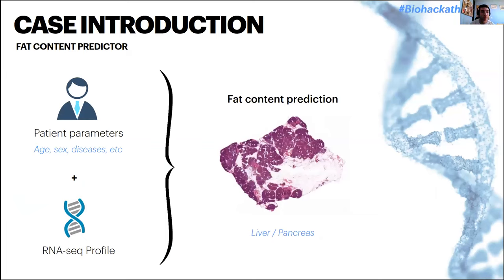Basically what we wanted to do for our challenge was make some sort of fat content predictor. The kind of data we had available included parameters like age and sex of the patients, as well as some of the related diseases they may have had. And then for a subset we had the RNA sequence profiles. We tried in several different ways to see if we could make a prediction of the fat content depending on these variables.